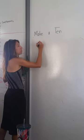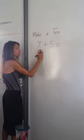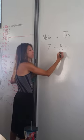For example, if it's 7 plus 5, you have to ask the kids, who's 7's BFF? Or how many more to make 10?